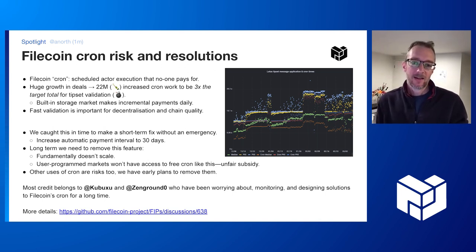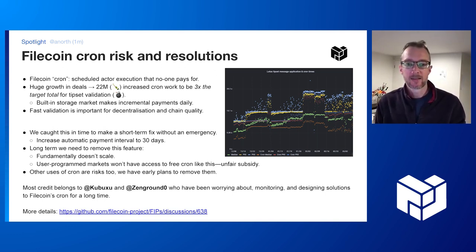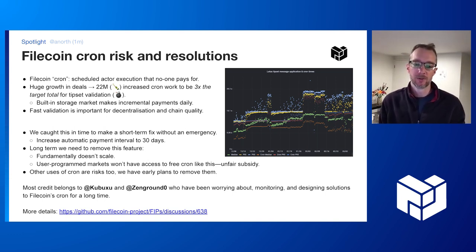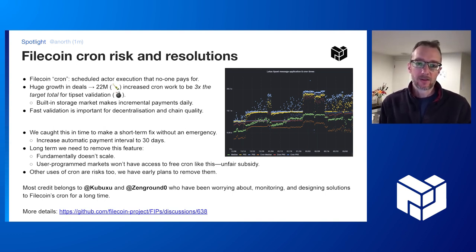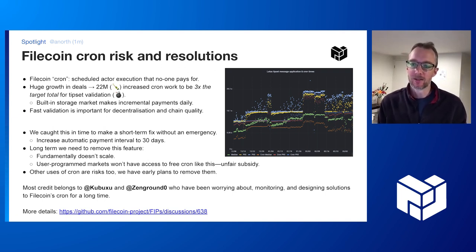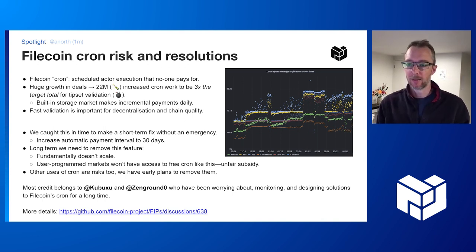Happily we caught this just in time — we detected it, understood what was going on, and proposed a fix for the Filecoin network in time to roll it into our normal release train. The next release this will target is network version 19, and planning for that is already underway. The short-term fix divides the problem by 30, which buys us at least six months to find a more permanent solution.